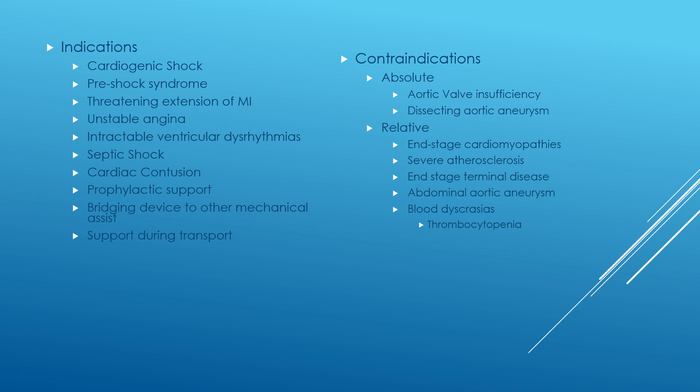Contraindications for the use of intra-aortic balloon pumps include absolute and relative contraindications. Absolute contraindications include aortic valve insufficiency and dissecting aortic aneurysm. Relative contraindications include end-stage cardiomyopathies, severe atherosclerosis, end-stage terminal disease, abdominal aortic aneurysm, blood dyscrasias, and thrombocytopenia.